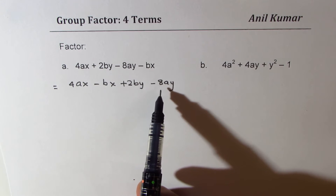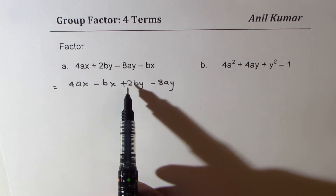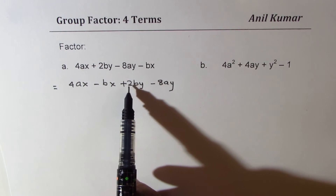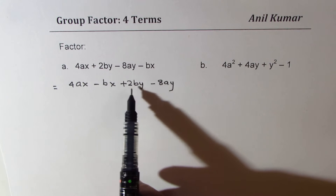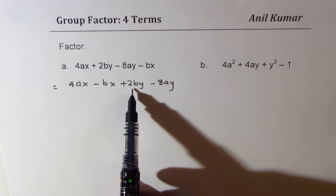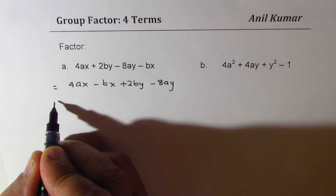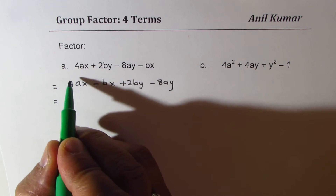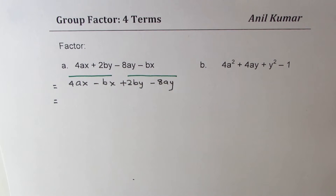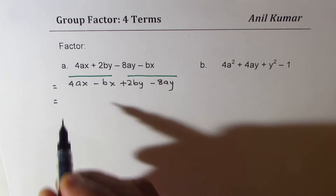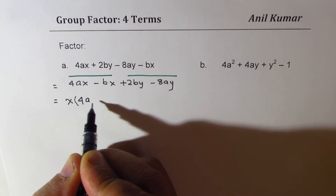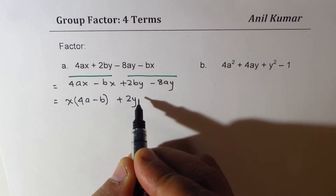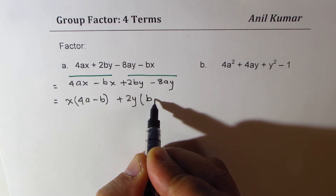Some of you could have written minus 8ay before 2by, mainly because what we are looking for is a ratio of 4 to 1. In this particular solution I'll keep it as is and show you how the two ways of doing it can matter. In the first two terms, x is common, giving us 4a minus b. In the next two terms, 2y is common, giving us b minus 4a.